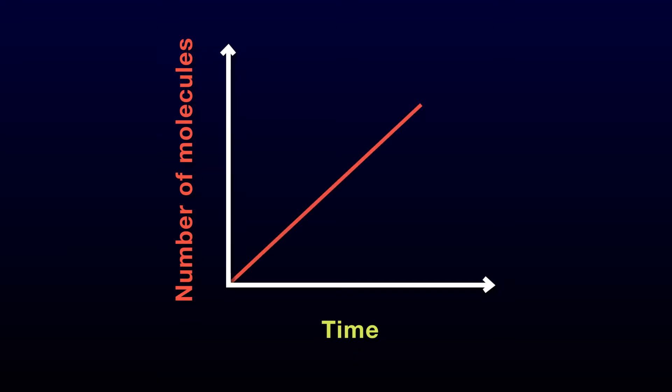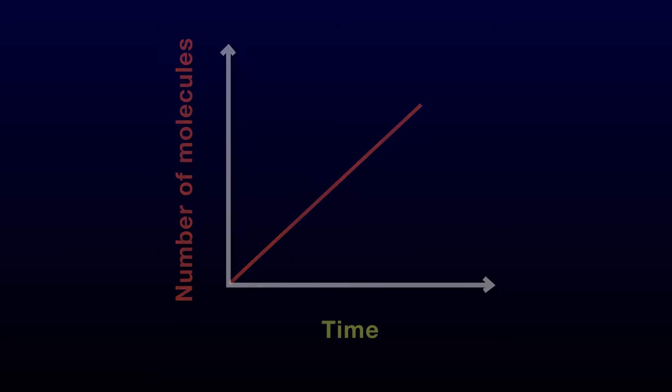Looking at this graph, as time progresses — meaning as we move to the right — we see more molecules traveling across the membrane. This translates into a higher number on the y-axis.